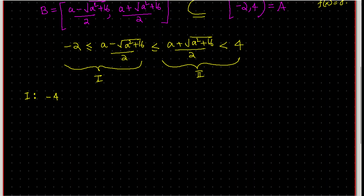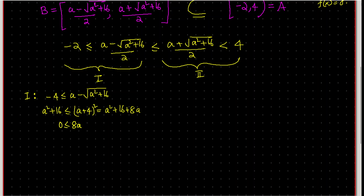Solving Inequality 1: -4 ≤ a - √(a²+16). Rearranging and squaring gives a²+16 ≤ (a+4)² = a²+16+8a, which means 8a ≥ 0, so a is non-negative. This is the first condition: a ≥ 0.